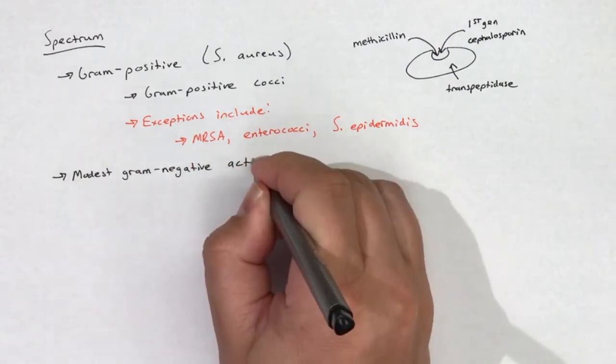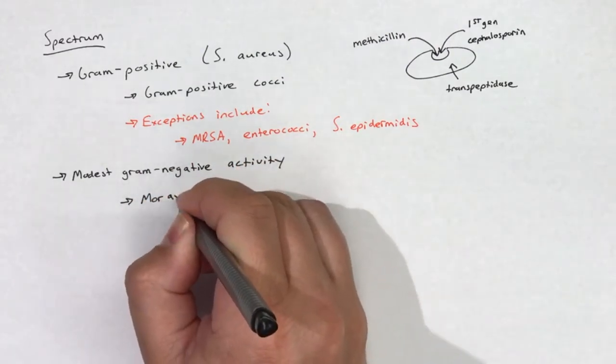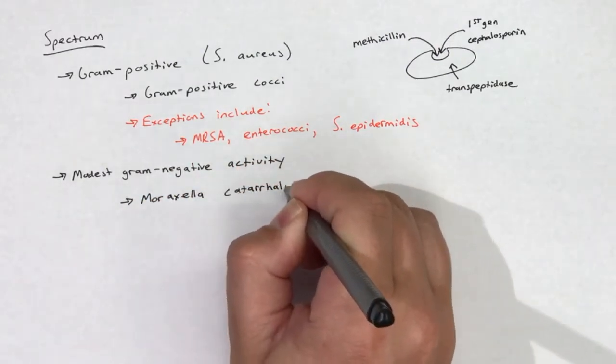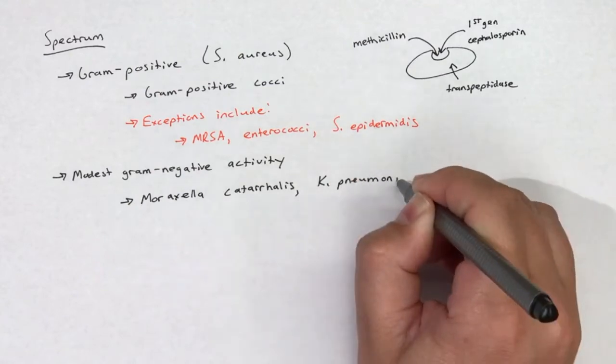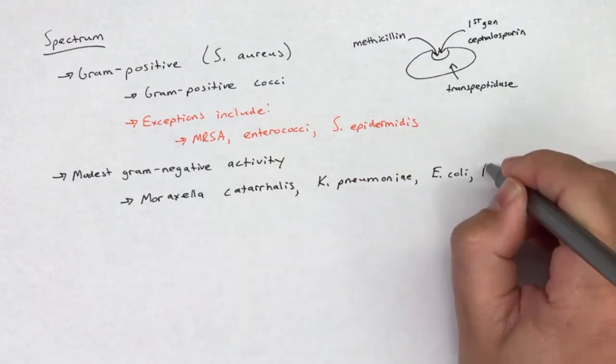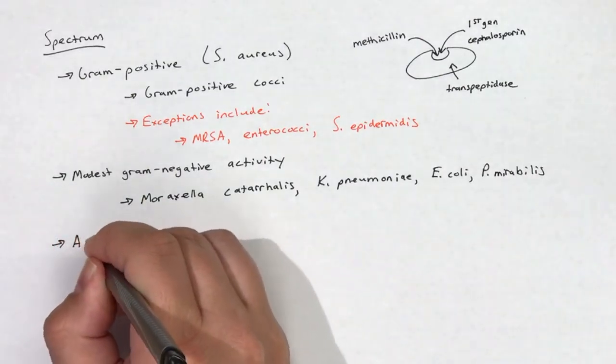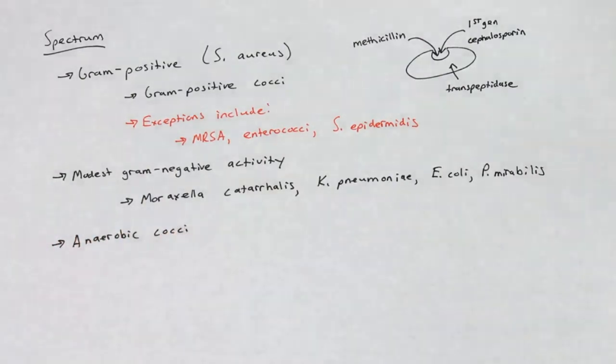In addition to good activity against gram-positives, first-generation cephalosporins have modest activity against gram-negative bacteria, including Moraxella catarrhalis, Klebsiella pneumoniae, E. coli, and Proteus mirabilis.